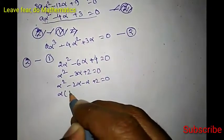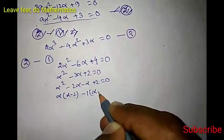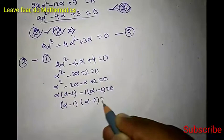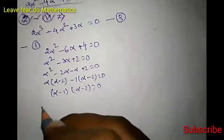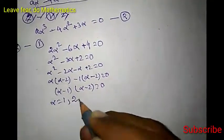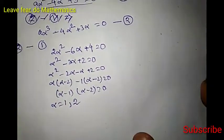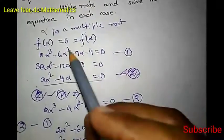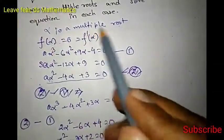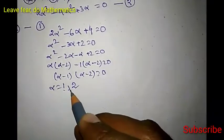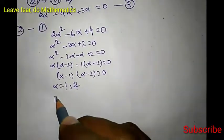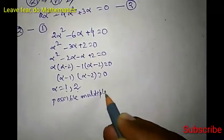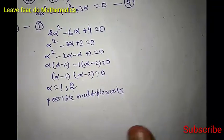Now factor: alpha squared minus 2 alpha minus alpha plus 2 equals 0. So alpha times (alpha minus 2) minus 1 times (alpha minus 2) equals 0. This gives (alpha minus 1)(alpha minus 2) equals 0. So alpha equals 1 or 2. These are the possible multiple roots — 1 and 2 may be the possible multiple roots.